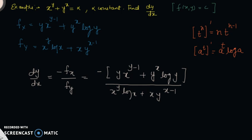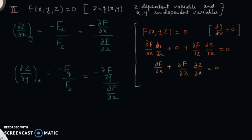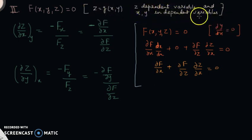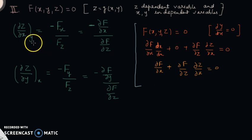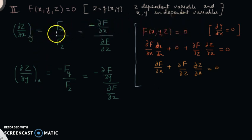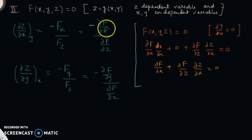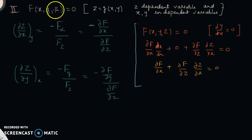Now let's go ahead with the case where we have more independent variables. Here we have a function f(x, y, z) = 0 where z is dependent on x and y, while x and y are independent. To find the rate of change of z with respect to x, we keep y constant, and to find the rate of change of z with respect to y, we keep x constant. Applying the chain rule gives ∂z/∂x = −f_x / f_z, and ∂z/∂y = −f_y / f_z.